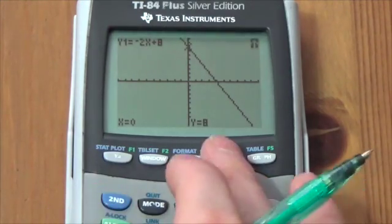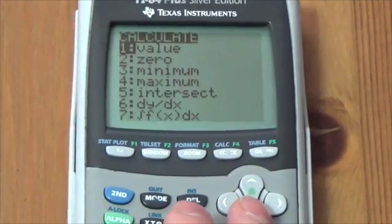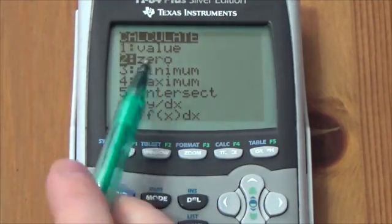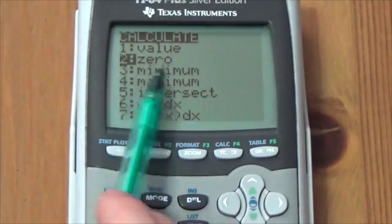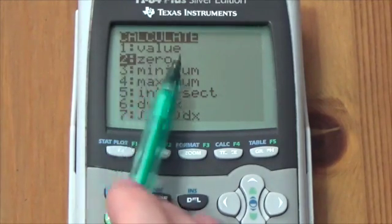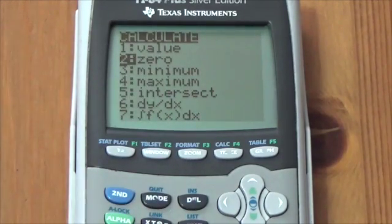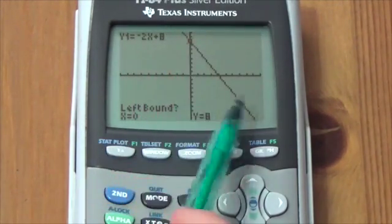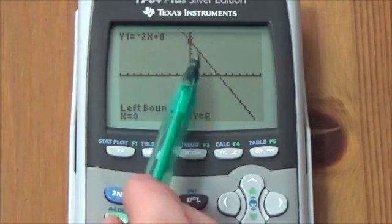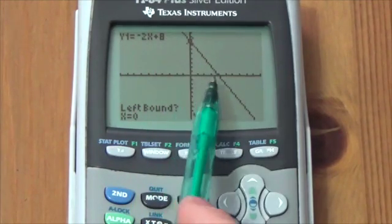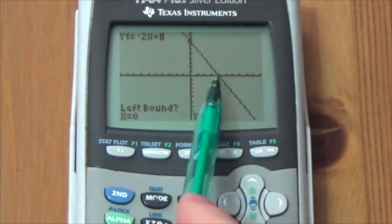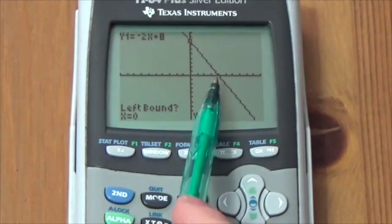Now, another tool that you've got in here that's equally important, or arguably even more important, is the 0 feature. Now, there's some vocabulary going on here. When we talk about the 0 feature, what we're talking about here are the 0s of the function. Where does this function, and notice that it is a function, where does this function go to 0? Well, right there. The value of the function is 0 at that point right there, and I want to find that.